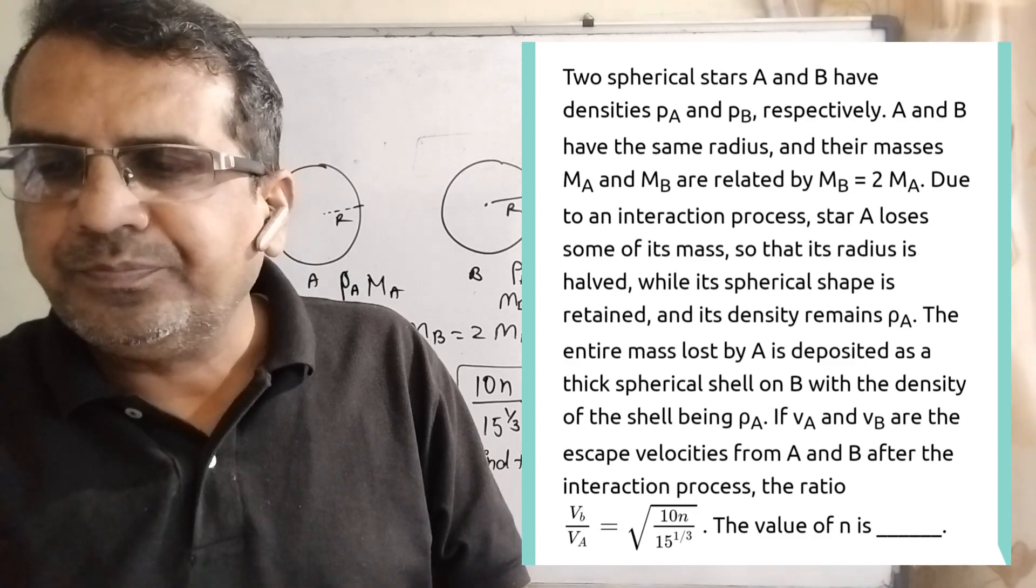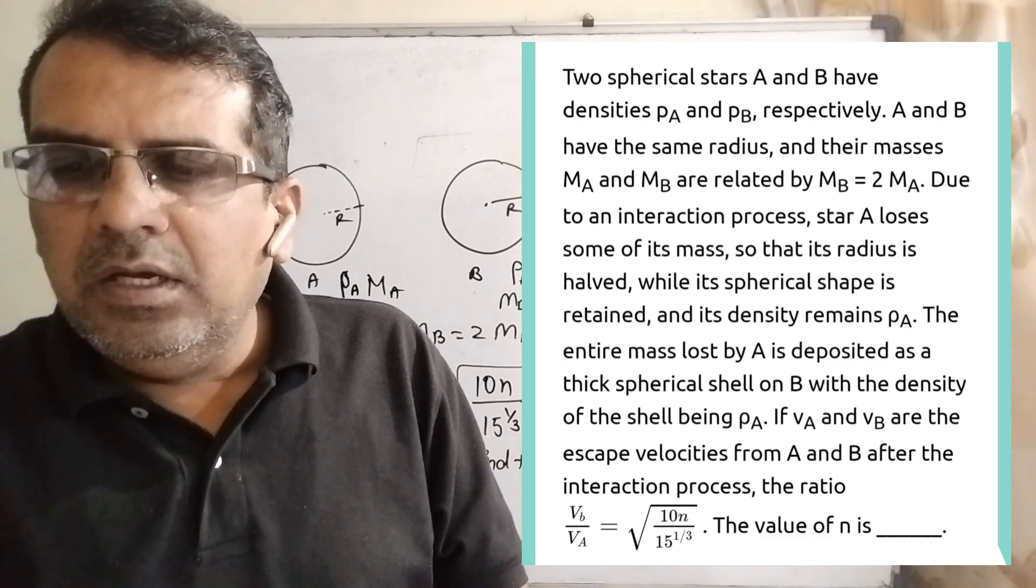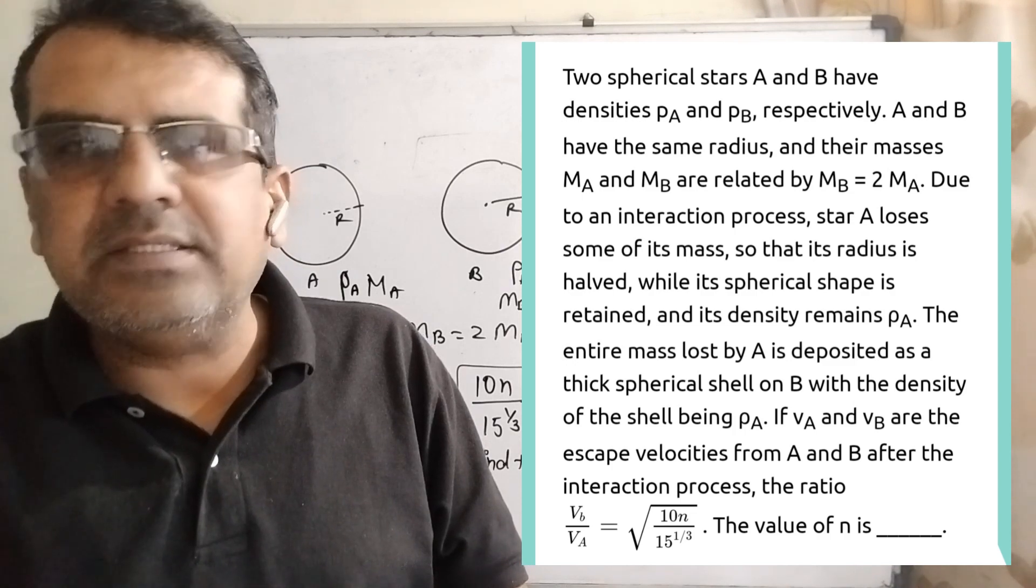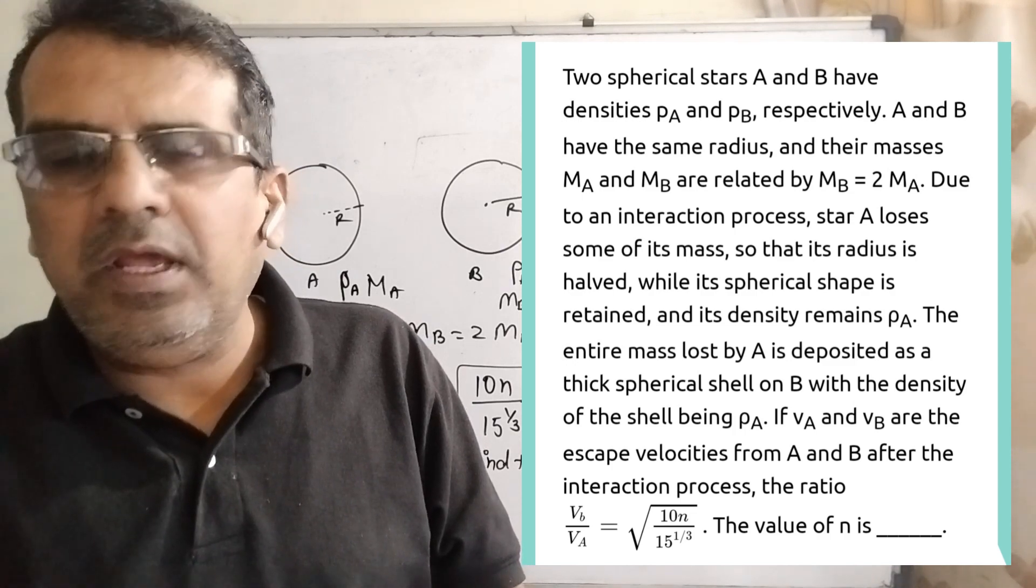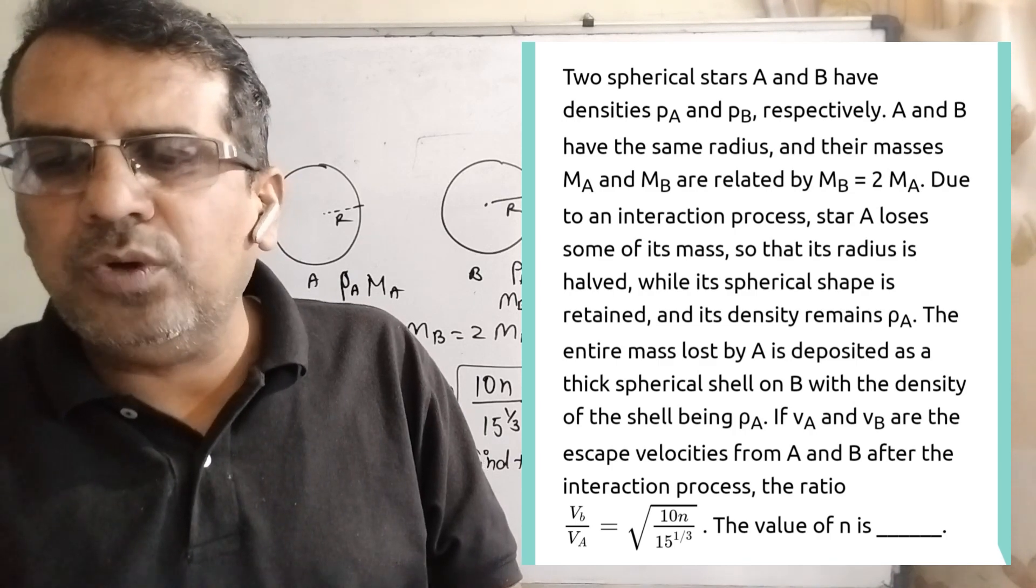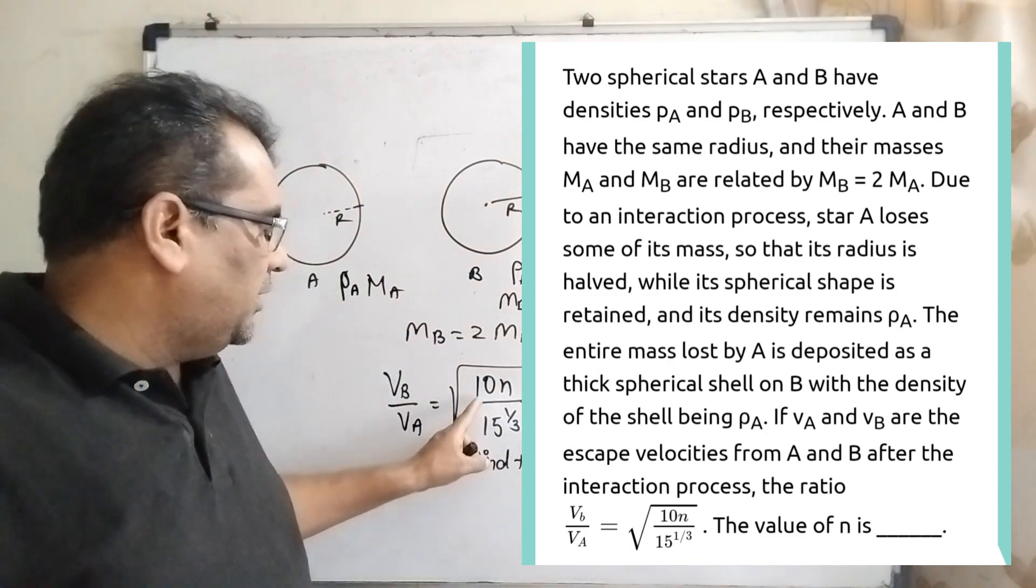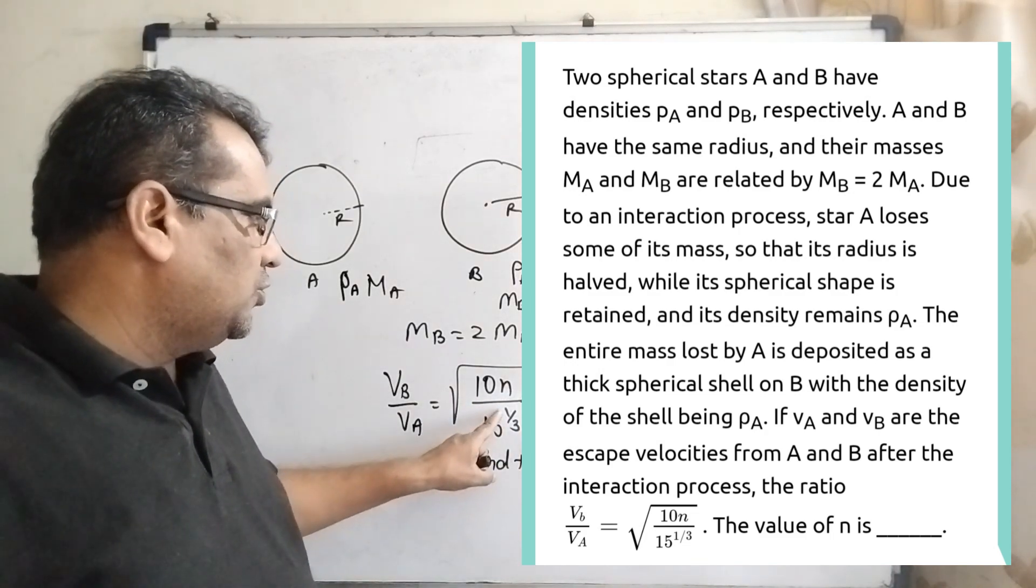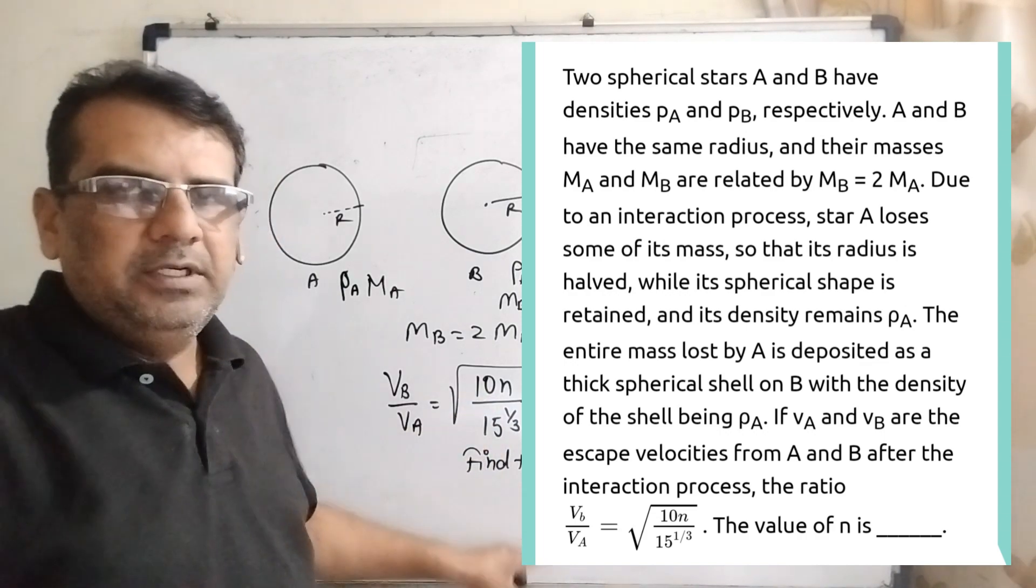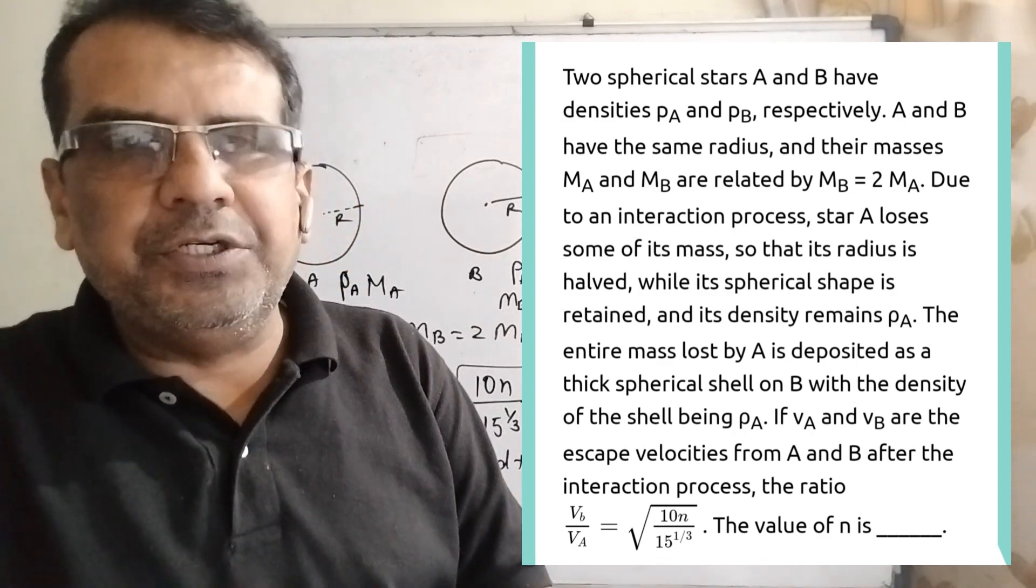The density of the shell is ρA. If Va and Vb are the escape velocities from A and B after the interaction process, the ratio Vb upon Va equals root of 10N upon 15 raised to power 1/3. Here we have to find the value of N. This question is from JEE Advanced 2022.